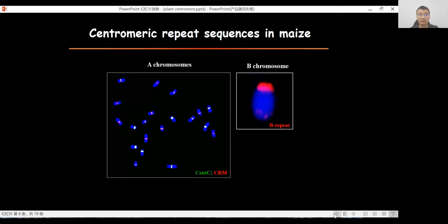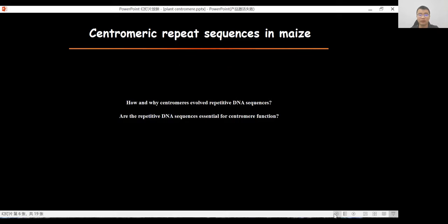The centromeric retrotransposon CRM element is located in the centromere of maize A chromosomes, and the satellite B-repeat is located in the maize B chromosome centromere. However, how and why centromeres involve repetitive DNA sequences, and are repetitive DNA sequences essential for centromere formation? These are largely unknown.